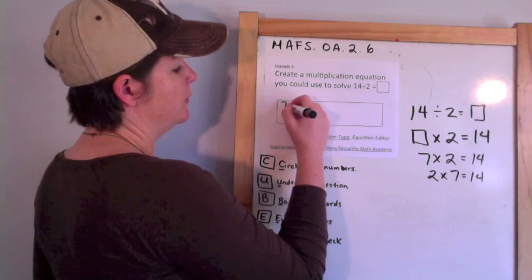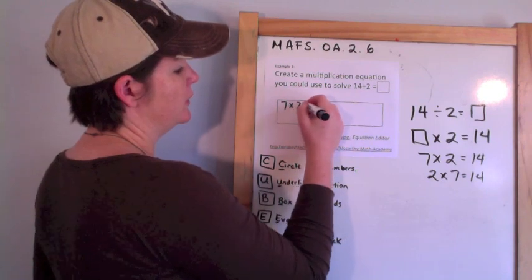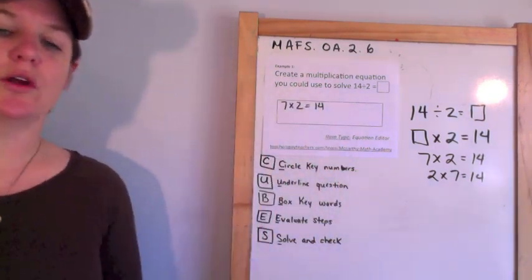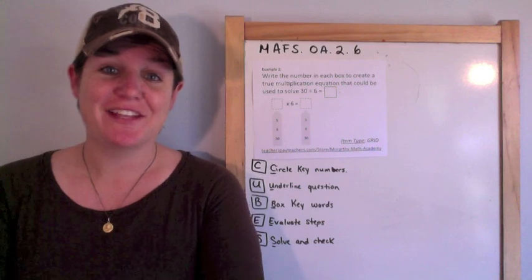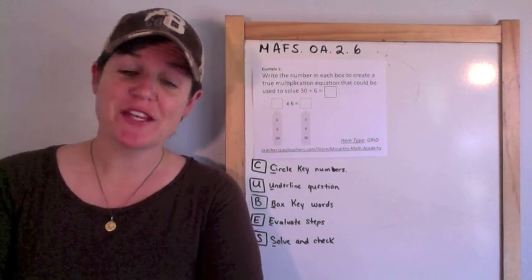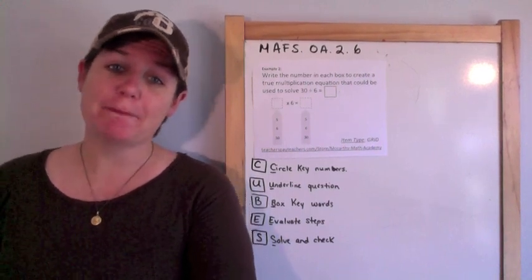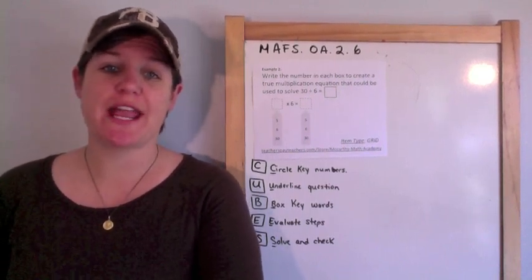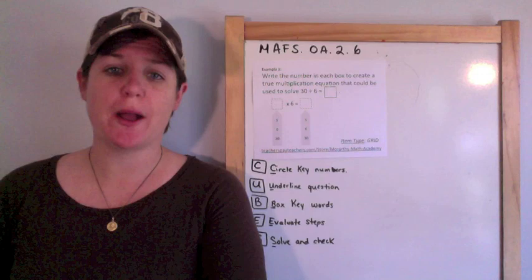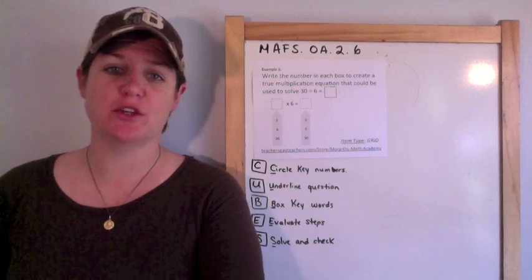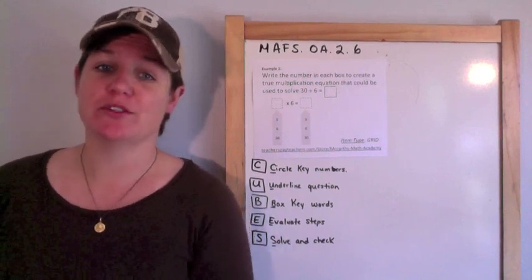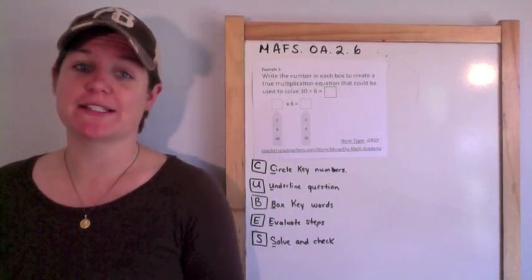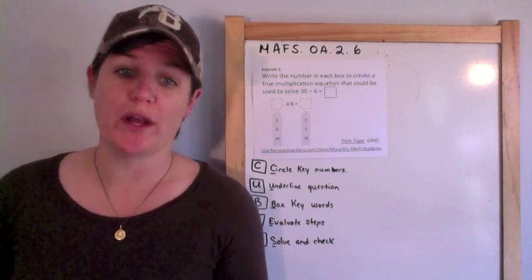I'm going to plug in this one, but either one would work. Example 2 says: write a number in each box to create a true multiplication equation that could be used to solve 30 divided by 6 equals what?